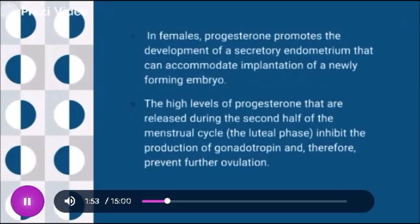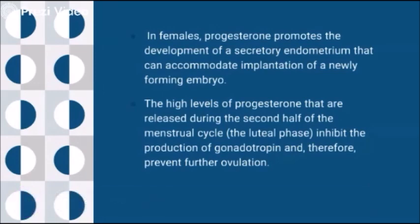In females, progesterone promotes the development of secretory endometrium that can accommodate implantation of a newly forming embryo. Implantation is the process where the fertilized ovum gets placed into the embryo, and progesterone plays a very important role in that process. The high level of progesterone released during the second half of the menstrual cycle, that is the luteal phase of the reproductive cycle, inhibits the production of gonadotropin and therefore prevents further ovulation.